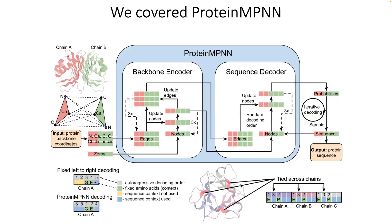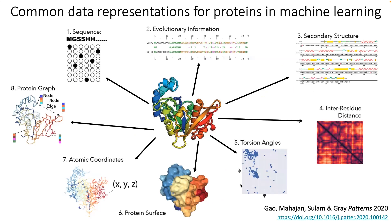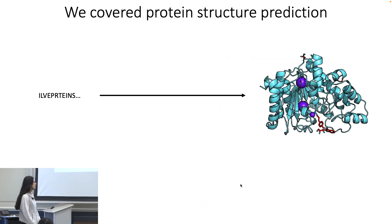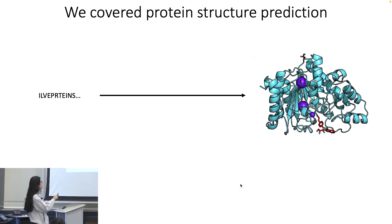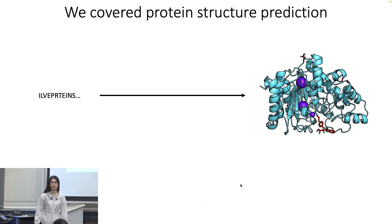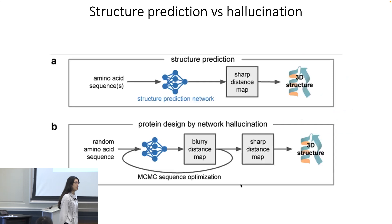Protein MPNN is a method for fixed backbone design: given backbone coordinates you want to keep, you find new protein sequences that would fold into the same structure. We also discussed representations for machine learning in the protein space, constructing protein graphs, and learning on or predicting atomic coordinates. Structure prediction goes from protein sequences to 3D structure as close to the ground truth as possible. Now we're addressing something in the middle — hallucination.